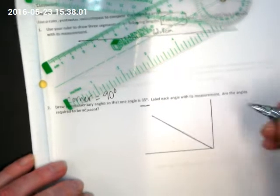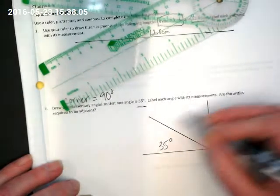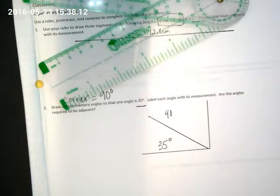And then I want one of the angles to be 35 degrees. So if I set this to 35, there's the 30 and just after it is 35. I'm going to set this here so that I can draw this angle here.